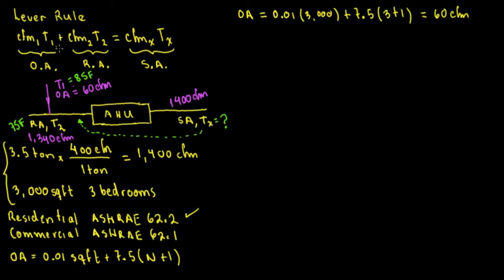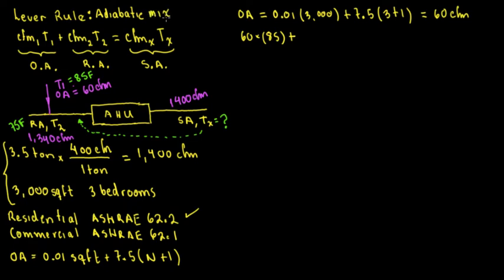Temperature X — we're going to put everything into the lever rule formula. CFM1 × T1 is 60 × 85. This is also called a weighted average, and in some books this lever rule is also called adiabatic mixing of two air streams — outside air and return air. CFM2 × T2 is 1,340 × 75, and that equals 1,400 × Tx.